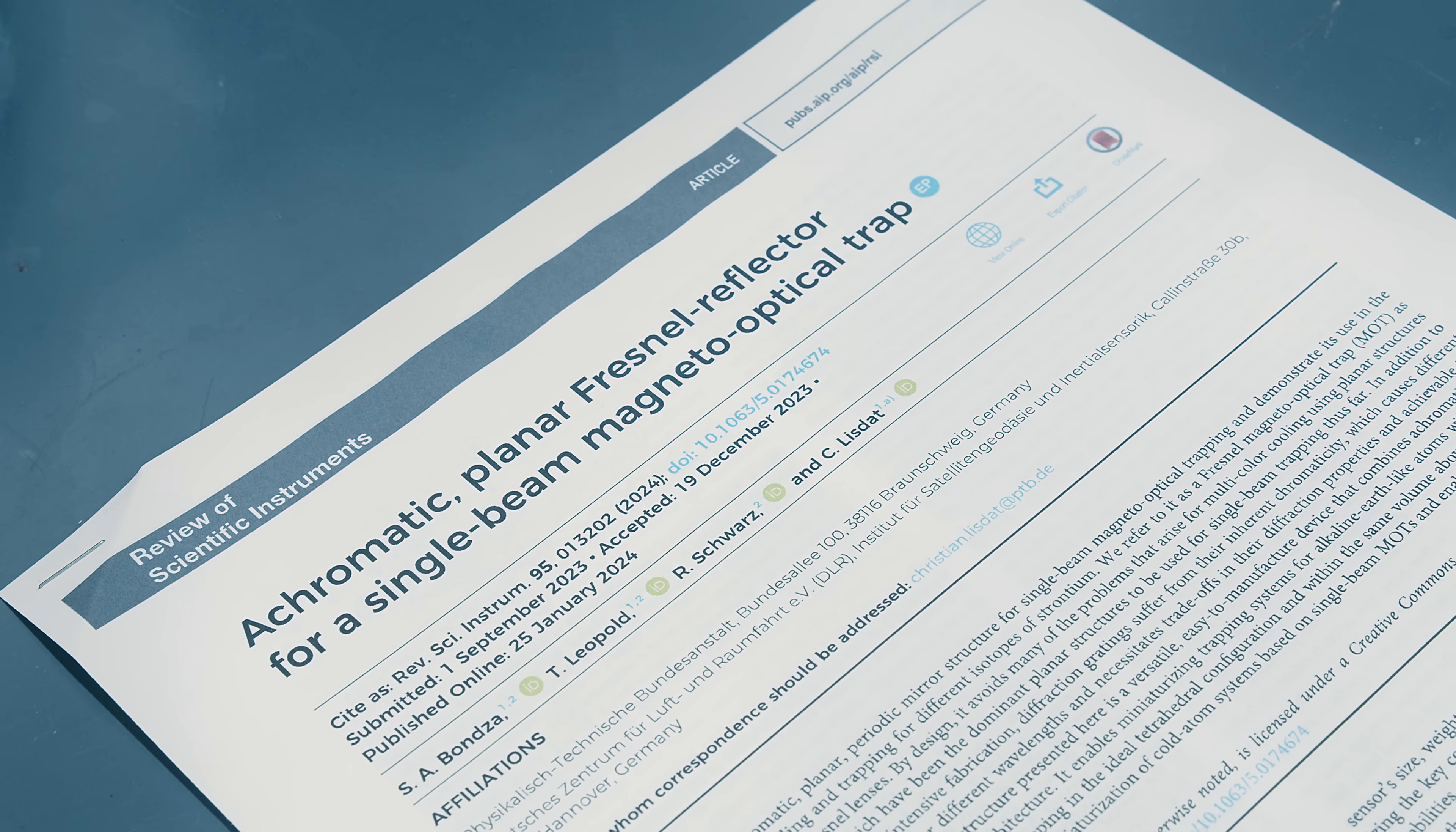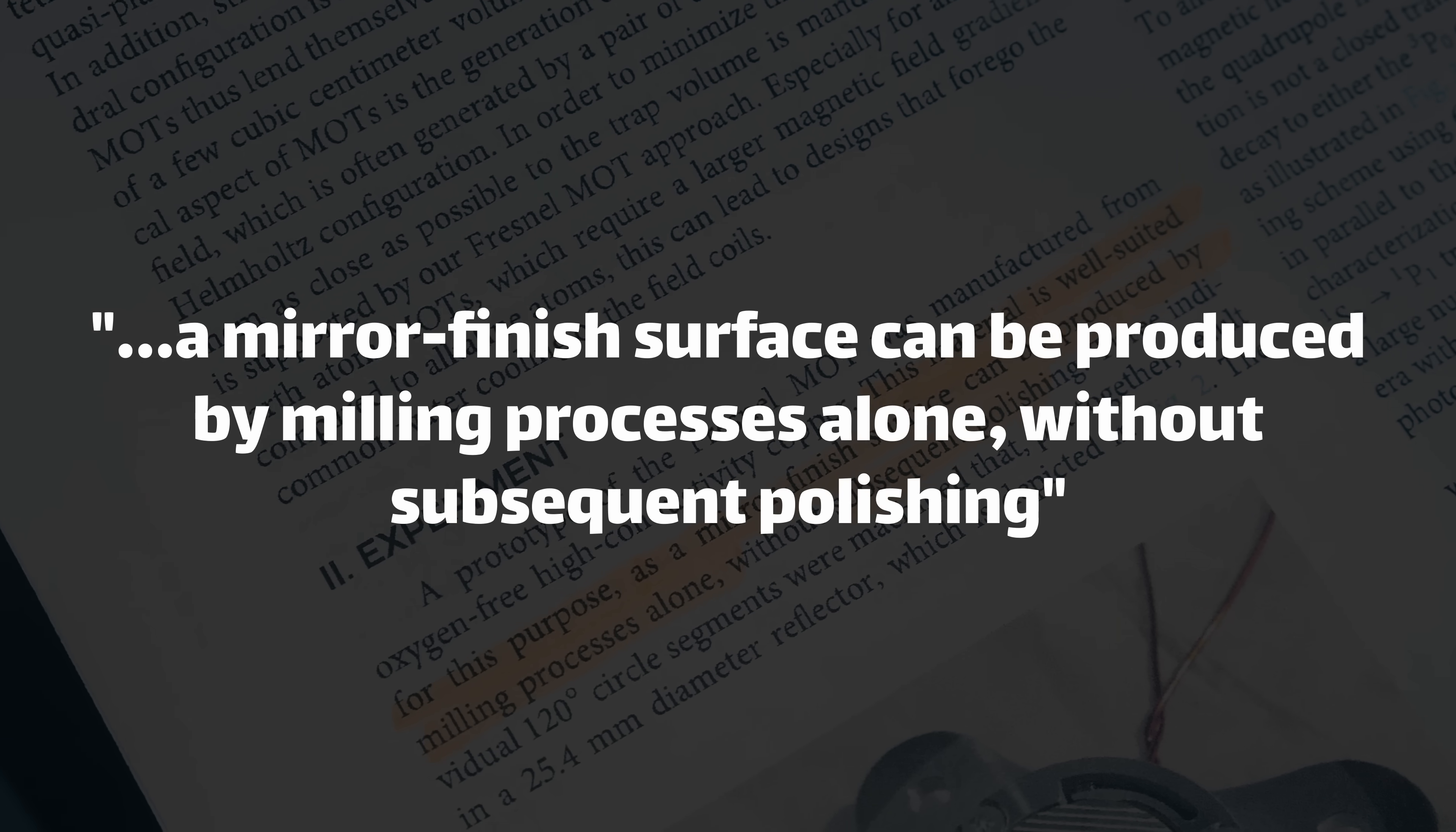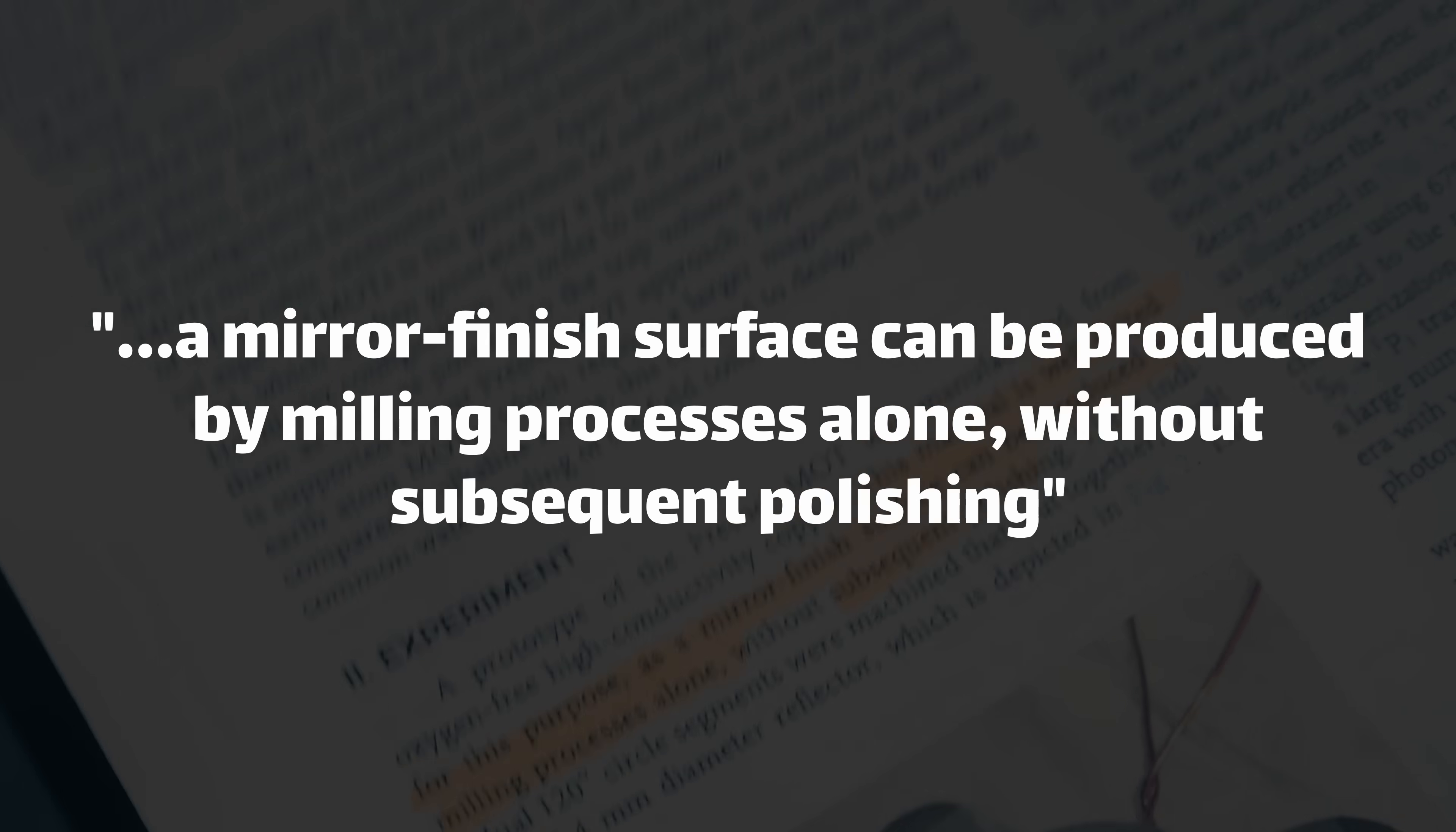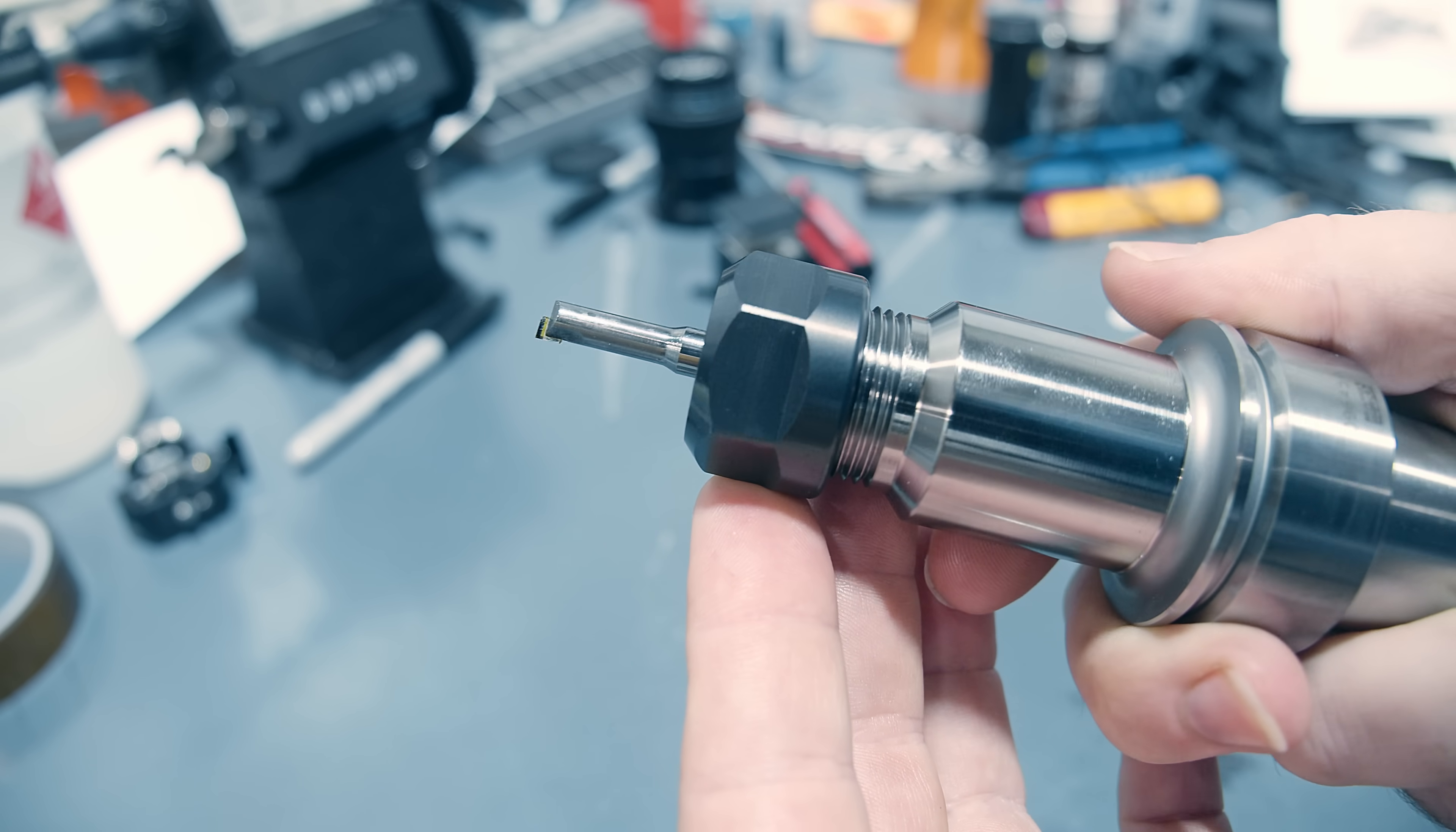This specific mirror configuration comes from a paper, but the details were pretty light. They said it was made from copper because, quote, a mirror-finished surface can be produced by milling processes alone, without subsequent polishing. The paper doesn't specify any other details about how they actually made the mirror. But there is one way to get something approaching a true optical mirror, and that's using a diamond tool. Specifically, a monocrystalline diamond.